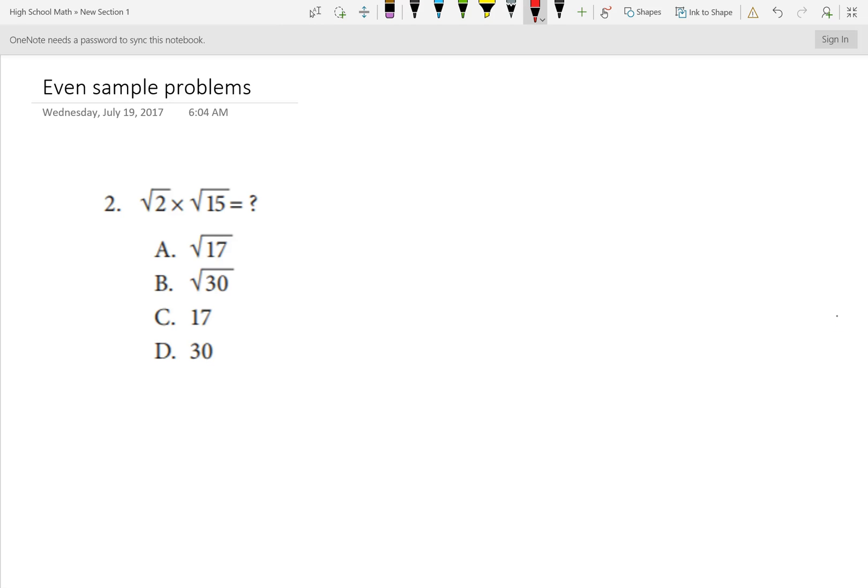In this video, we'll be looking at the even sample problems from our elementary algebra Accuplacer. The square root of 2 times the square root of 15 equals - the numbers underneath are called the radicand. When we're multiplying radical expressions, we simply multiply them together, so this will be the square root of 30, answer choice B.